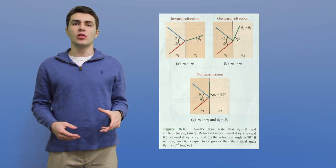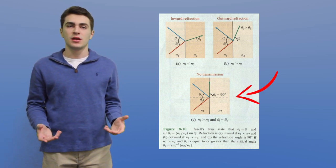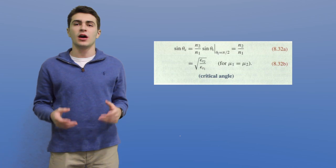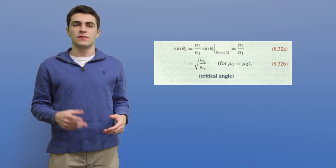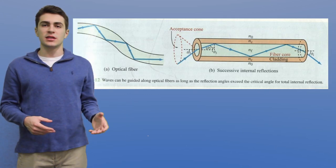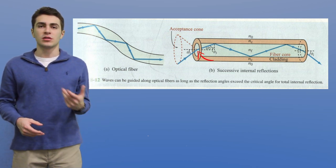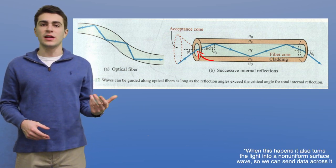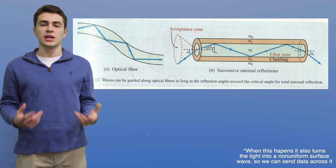If an angle is refracted enough, it will no longer enter the other medium, but instead create a 90-degree angle parallel to both mediums, called the critical angle. The critical angle of two mediums can be found by the formula: sine of the critical angle equals the index of refraction for the second medium divided by the index of refraction for the first medium. Lastly, if the angle of incidence — which is the value of the initial angle into the other medium — exceeds the critical angle, the light wave gets totally internally reflected. This means that the angle of light is refracted so much that it actually turns into a reflection, and this is how we use optical fibers for telecommunication.